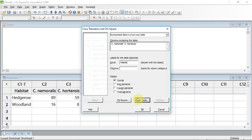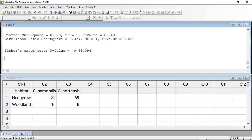We're now ready to run the test, so I'm now going to press OK in the main window, and the results output appears. As we can see in the results window, Minitab has given us a p-value for the Chi-square test for association of 0.543.